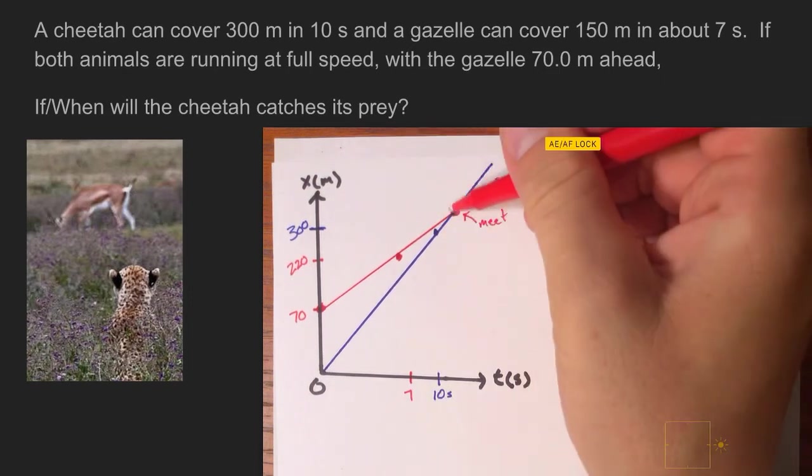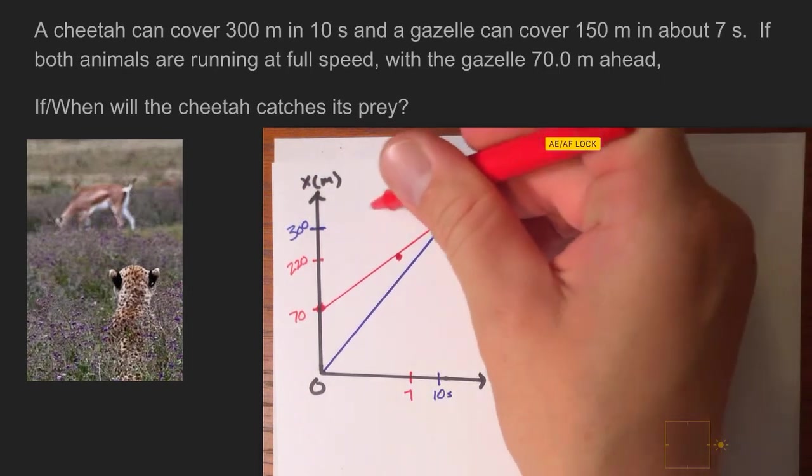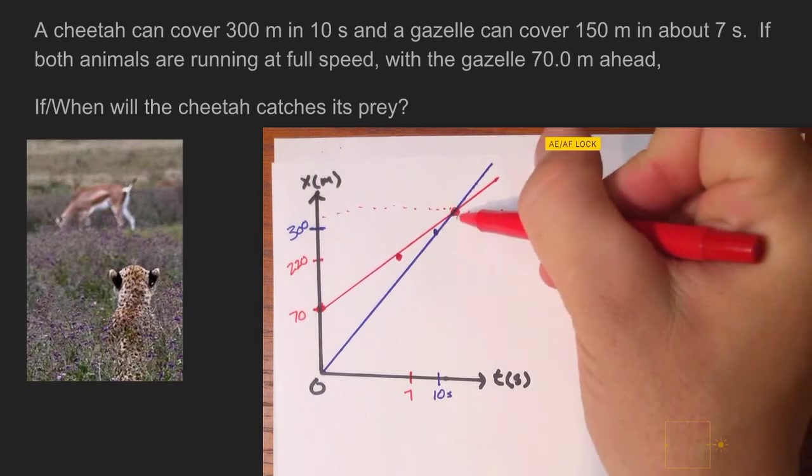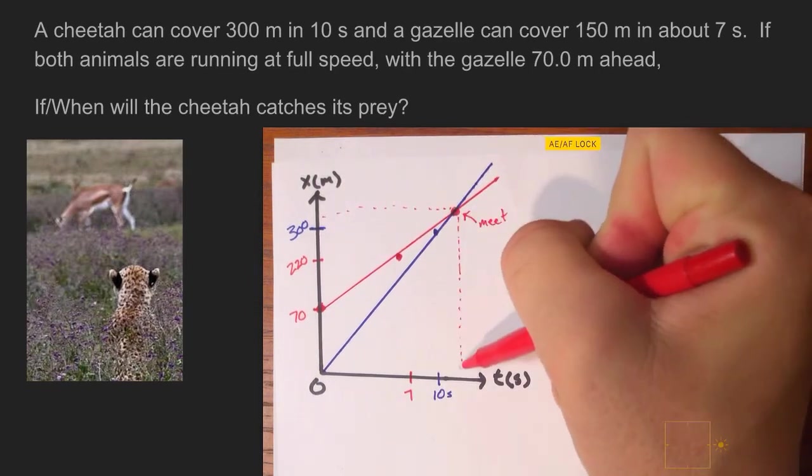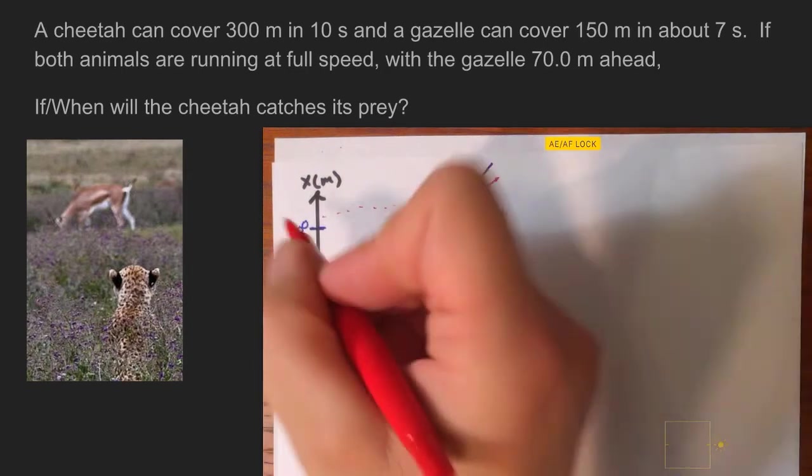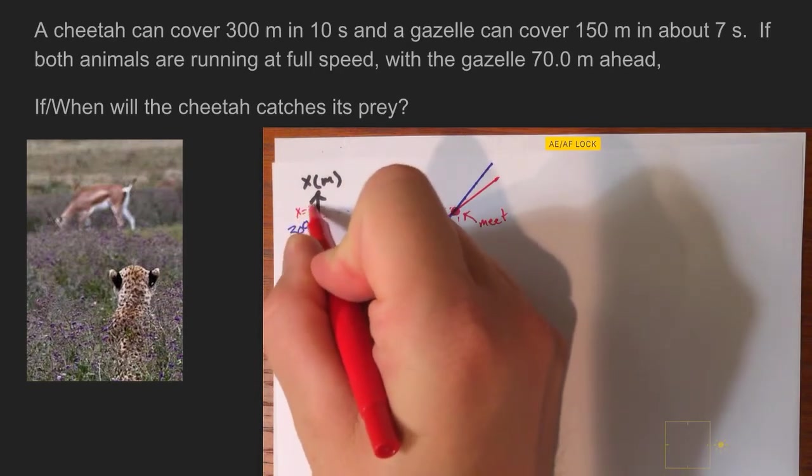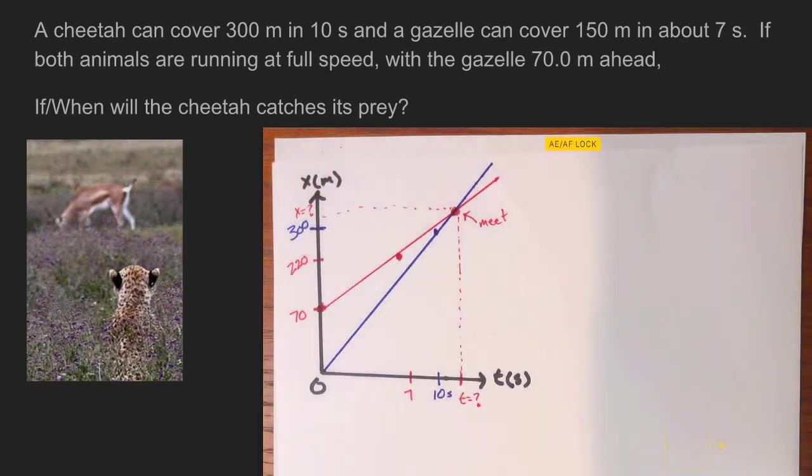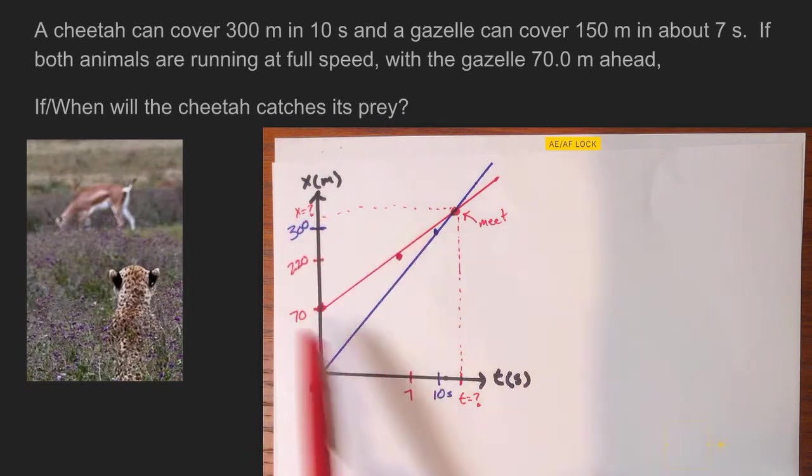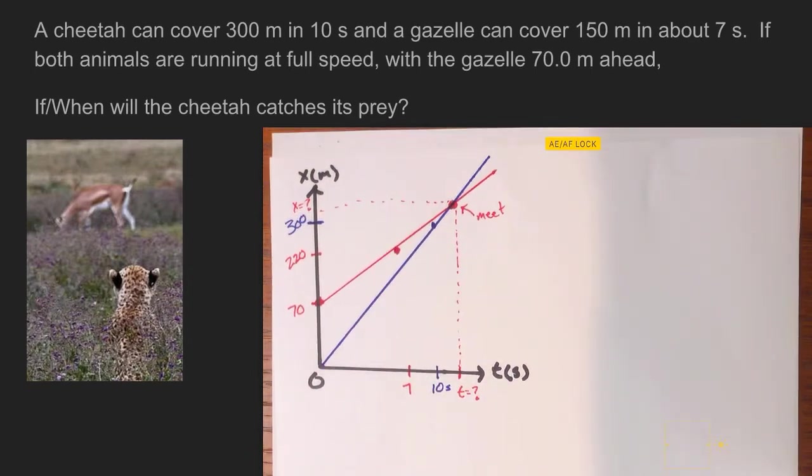They are both occupying the same position, and they're occupying that position at the same time as well. So now what we have is we know that there's going to be some time, we don't know what it is, and we know there's going to be a position, we just don't know what that is. So how do we do this? We know they meet, we just don't know where. We have two unknowns. We don't know the time, and we don't know the position.